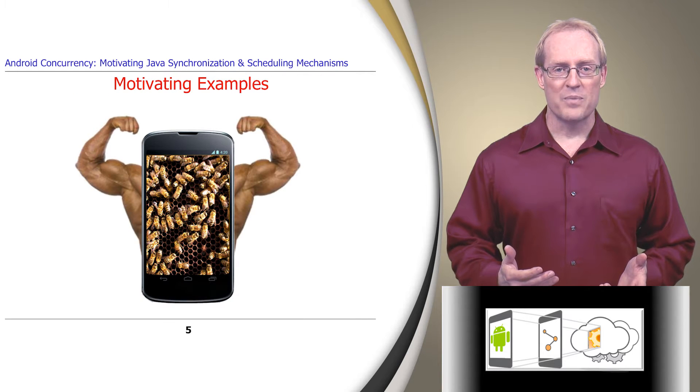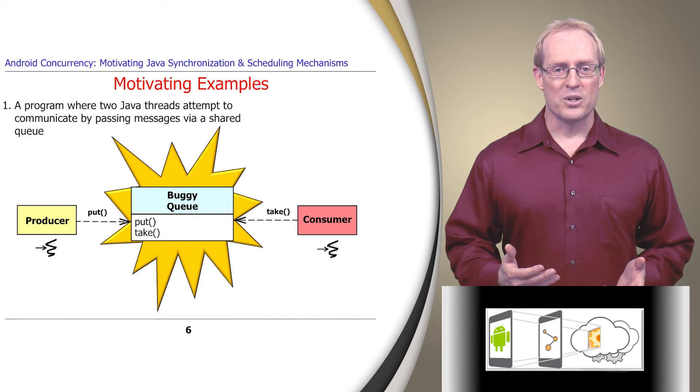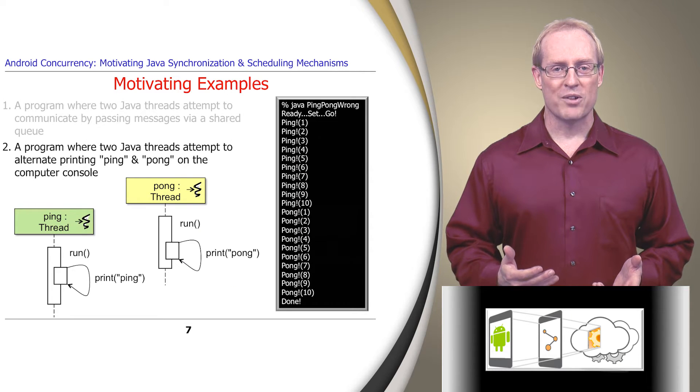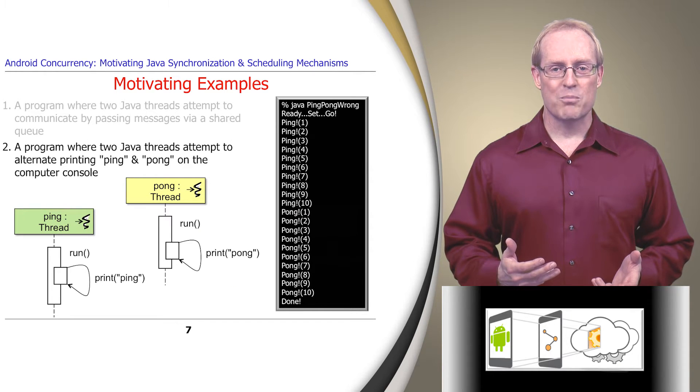To make the discussion concrete, we'll motivate the need for these mechanisms in the context of two examples. The first example is a program with two Java threads that attempt to communicate by passing messages via a shared queue. The second example is a program with two Java threads that attempt to alternate printing ping and pong on the computer console.